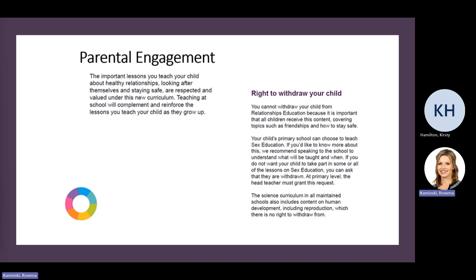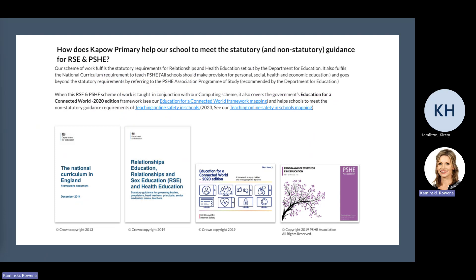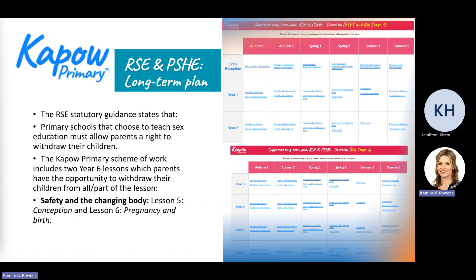We have our Kapow scheme of work, as shown on this slide. This document is being shared with all parents as part of this initial phase of the consultation. You can see on the screen a snapshot of what that includes for each year group. The resources that we will send out to parents along with this consultation document go into more detail about what each of these lessons contain. It also provides an overview of the sections that parents could choose to opt out of if they wanted their child to be withdrawn.